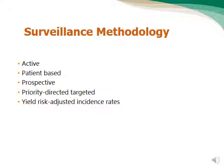Prospective means you start the surveillance while the patient is in the hospital and catheterized — you cannot do this retrospectively. Priority-directed or targeted means we choose certain locations based on a risk assessment plan, usually before the beginning of the year, stating the location, duration of surveillance, and different types of surveillance including CAUTI. We don't cover universally all locations but only higher-priority ones based on risk assessment.